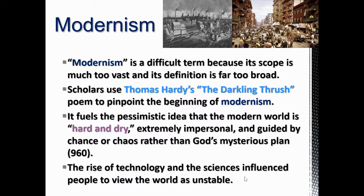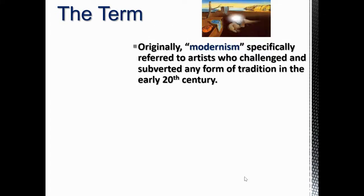The rise of technology and science influenced people to view the world as unstable. When you're transitioning from a world with no understanding of bacteria — where sneezing required keeping your soul in — to one where illness is caused by viruses and things in our bodies, that's a huge shift. And we have industrialization in terms of historical context, completely moving away from the agricultural European mindset into an industrial complex. Modernism tries to capture how and why people felt the world was going to be chaotic.